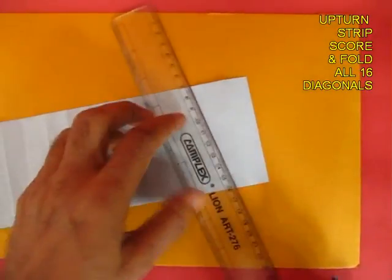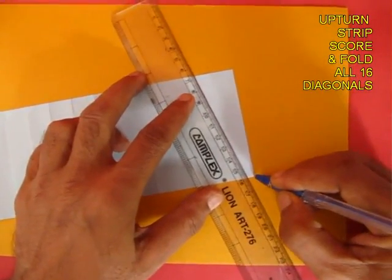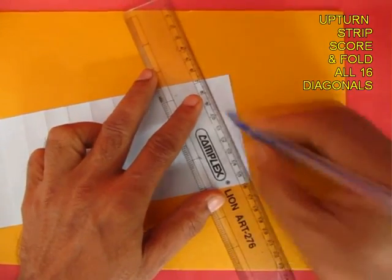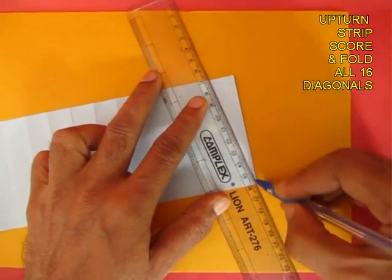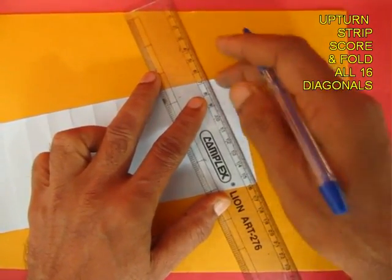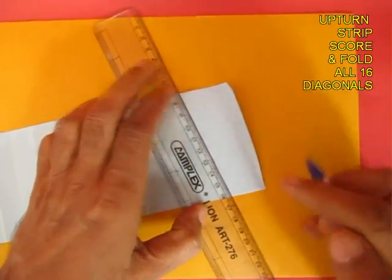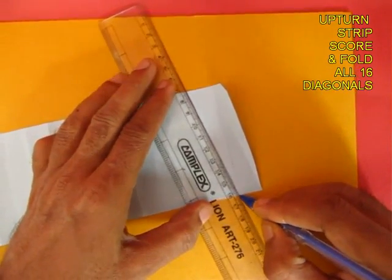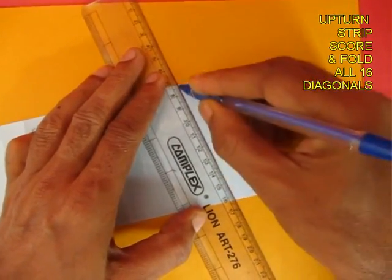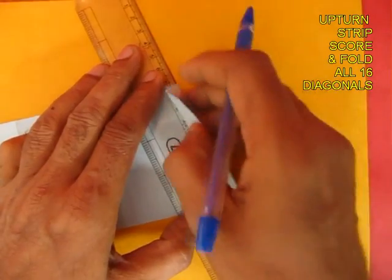Upturn the model so that the mountains are on top, then take a used ball pen without any ink and score the diagonals of all 16 rectangles. This is one diagonal. First score it with a used ball pen and then fold it.